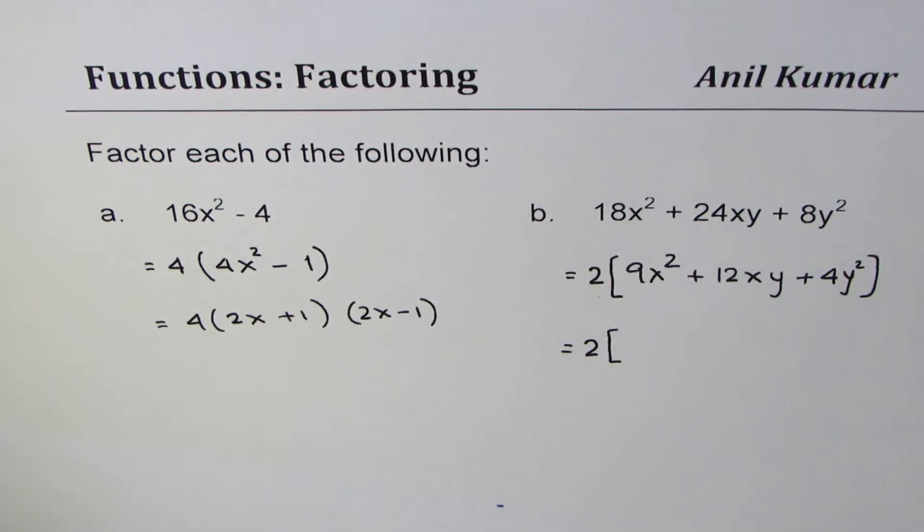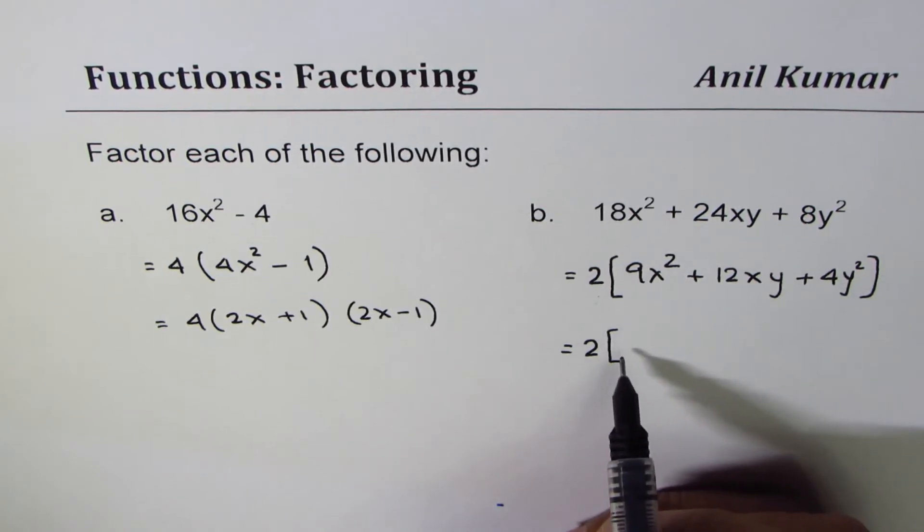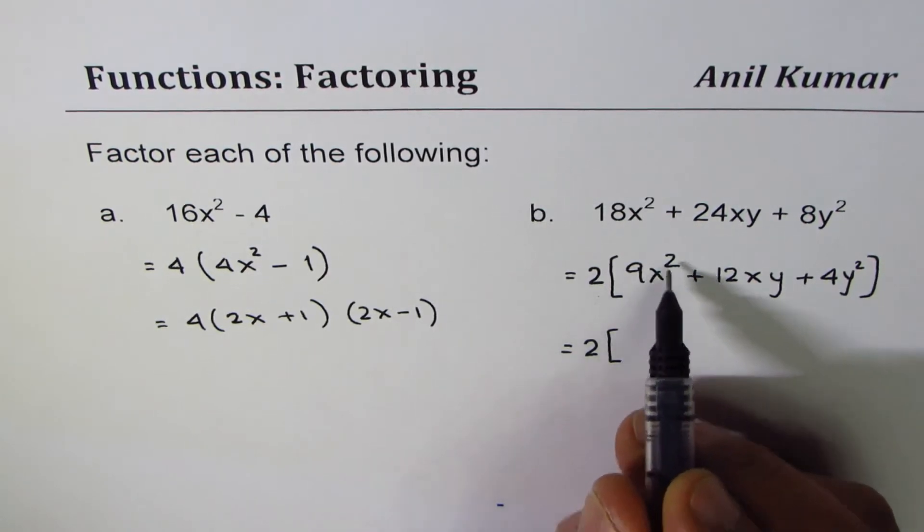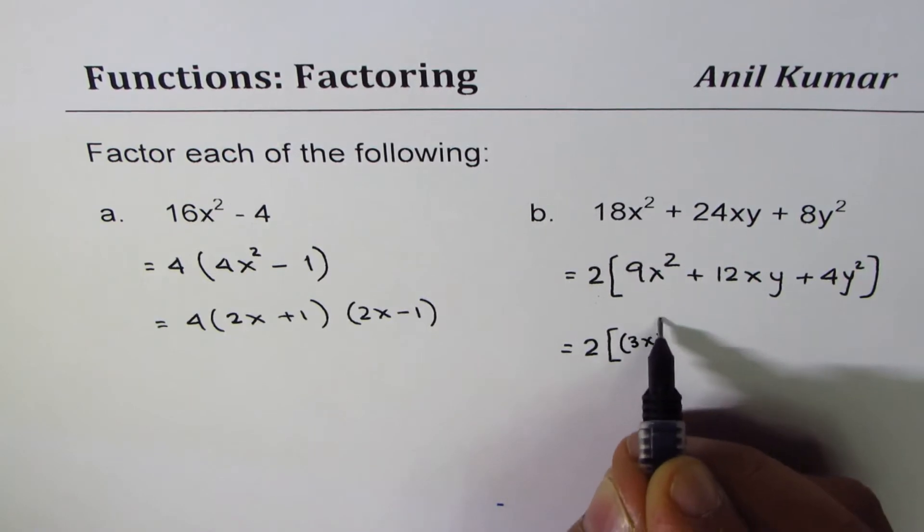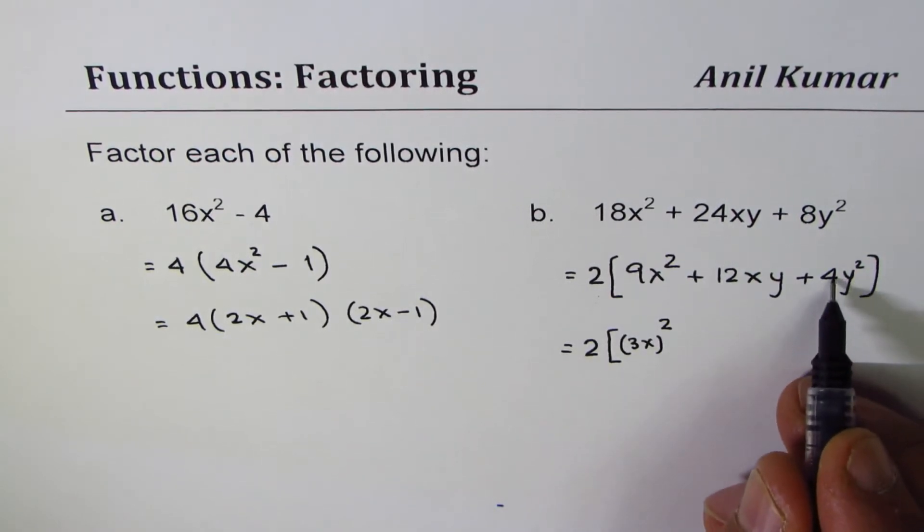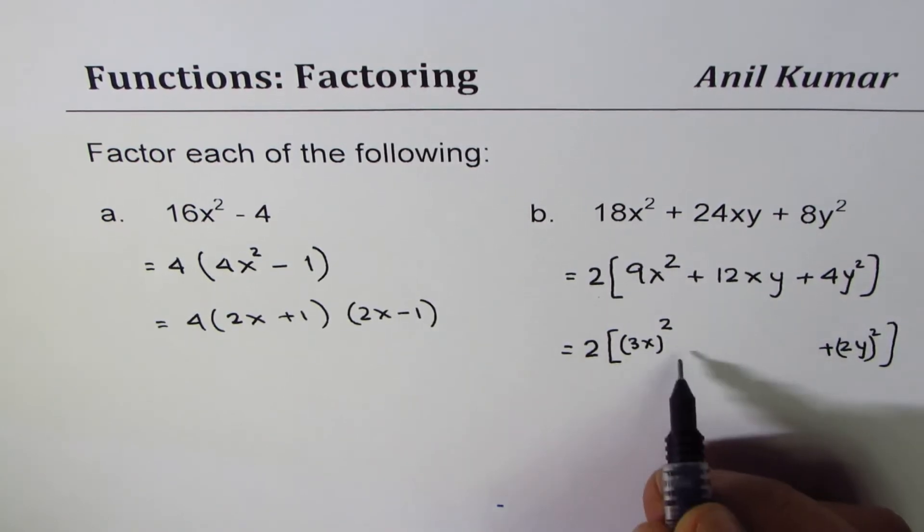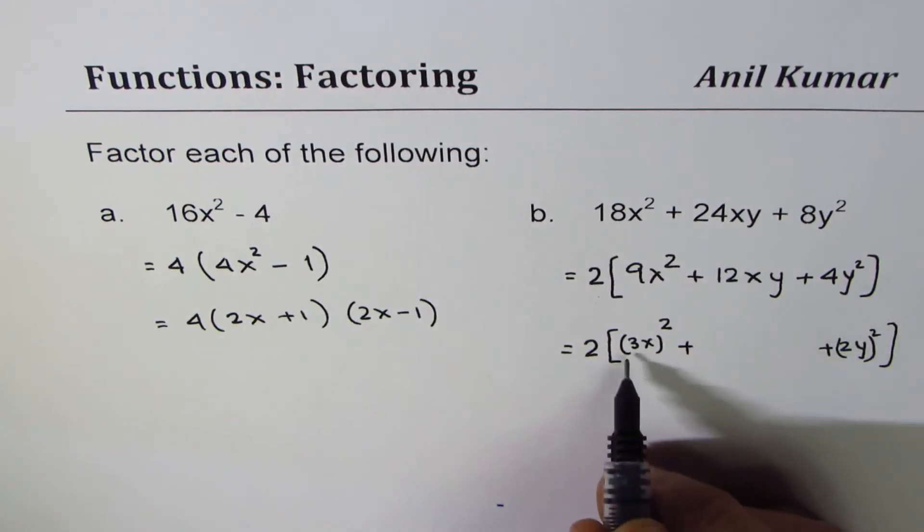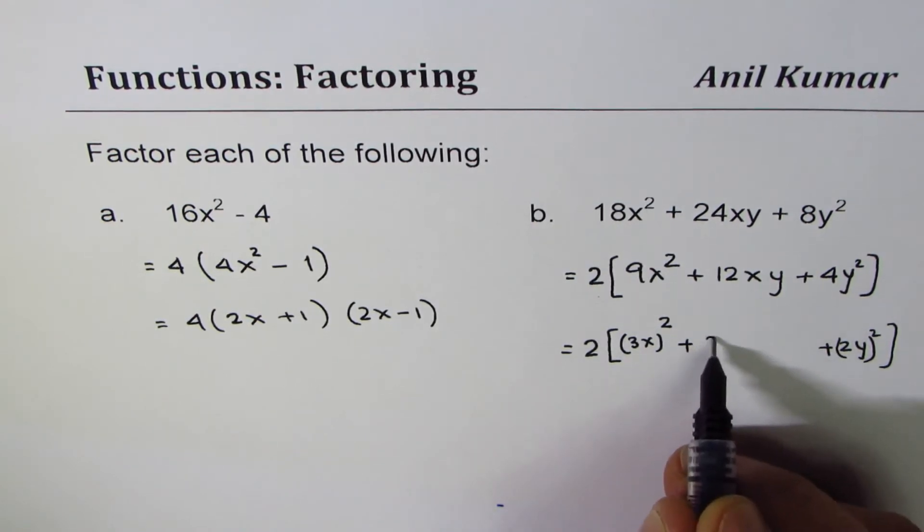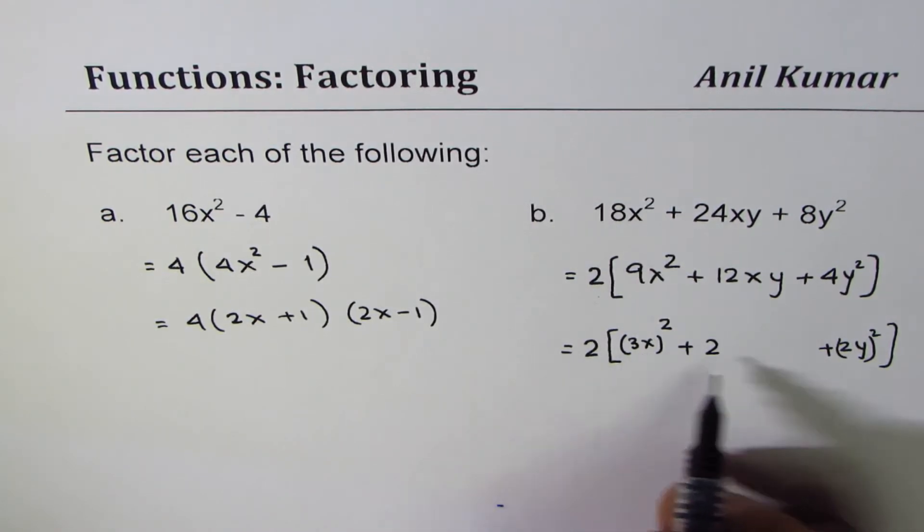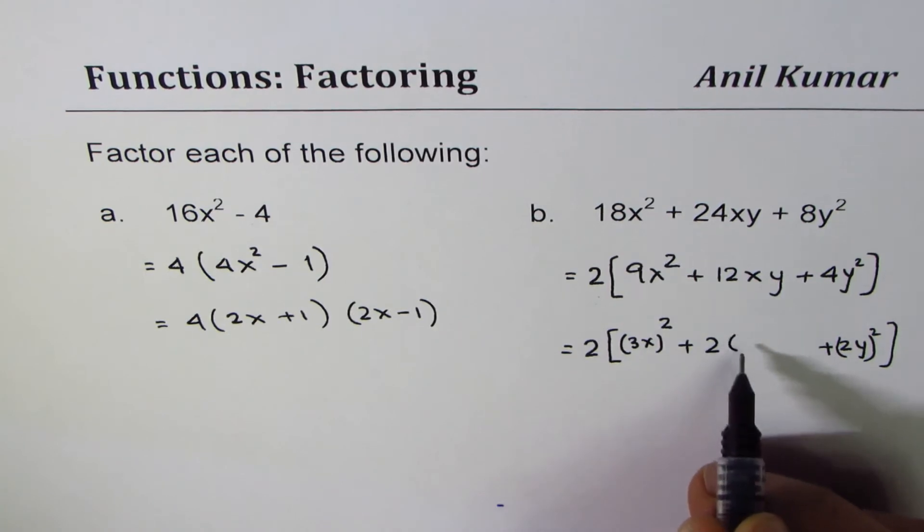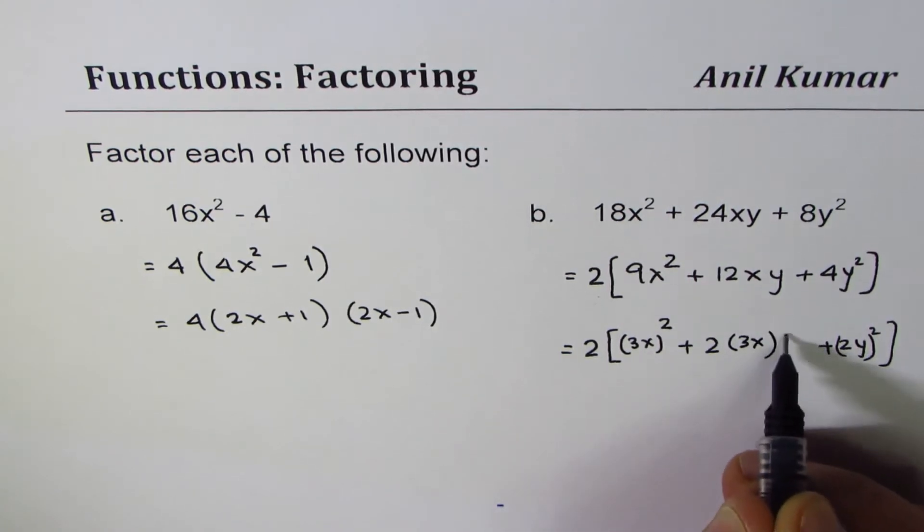So I'm just adding a step here which is not really required. 9x² could be treated as (3x)². 4y² could be treated as (2y)². And the center term is the product of these two times 2. 2 times we can write 3x times 2y.